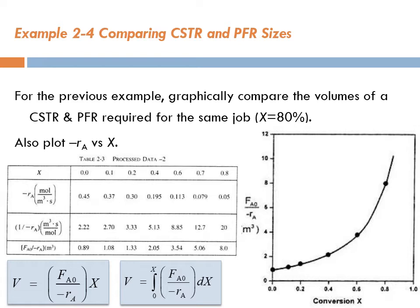We need to also plot minus rA versus X. But first, let's compare the volumes graphically. For a CSTR, the volume is represented by the area of a rectangle, while the volume of a plug-flow reactor is represented by the area under the curve of FA0 over minus rA when plotted versus X.